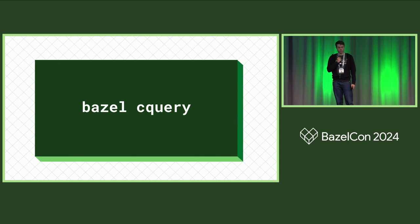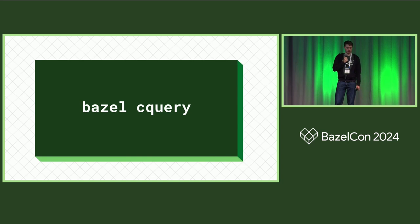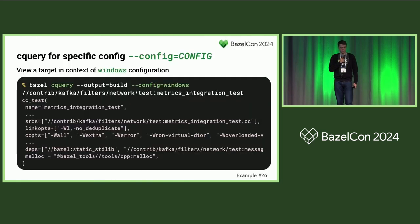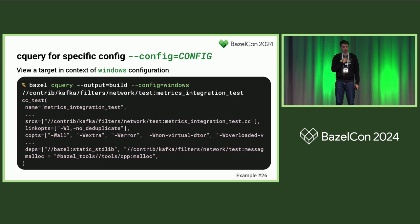That was it for standard query. Now we'll go into CQuery, which stands for configured query. Everything I showed for standard query works for CQuery. CQuery works after the analysis phase, so configurations, select statements, and so on are all resolved — giving more accurate results. CQuery also inherits all command line arguments that go with the Bazel build command. Here's a simple CQuery using output format build for one target, using config windows to see how this target looks and what C++ options are set when built for Windows.